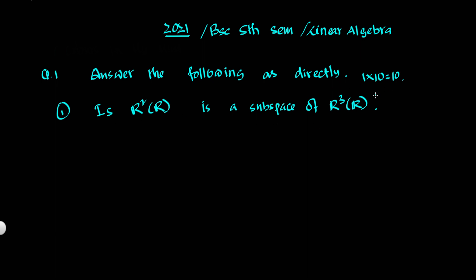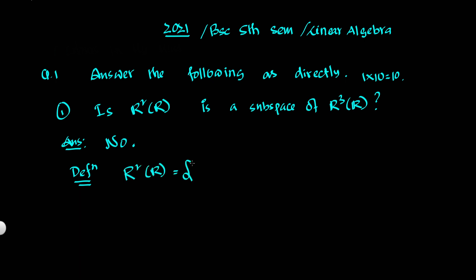The definition is already there. So this is not a direct answer. According to the definition, R² is nothing but the collection of all ordered pairs, where (x, y) belongs to R², the set of real numbers.